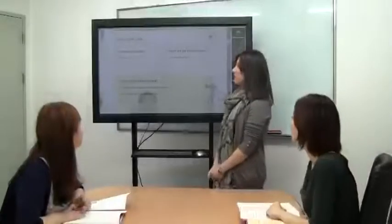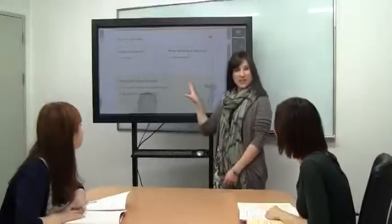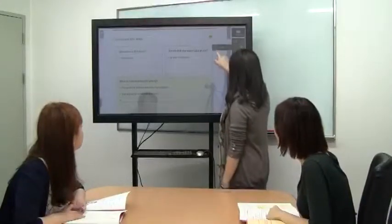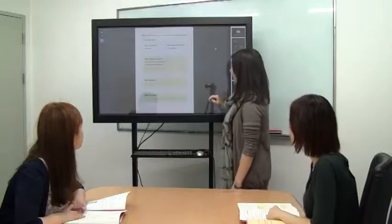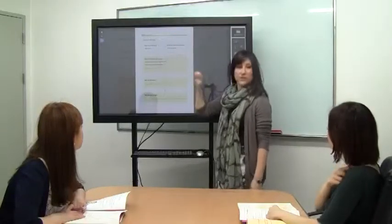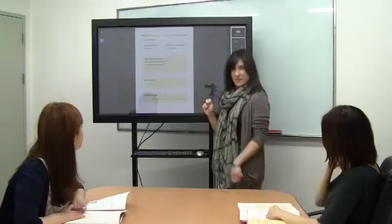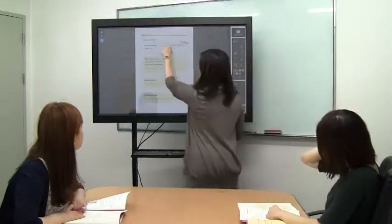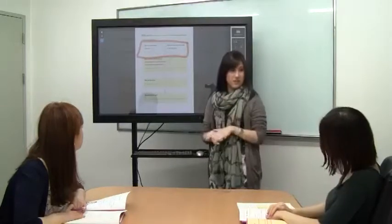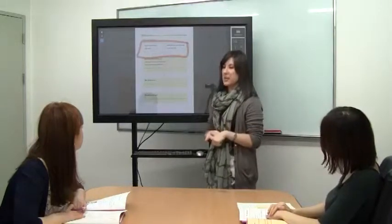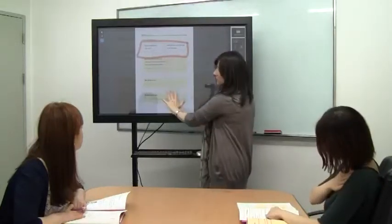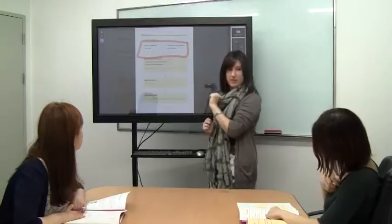Let's do our visual mapping. First, we're going to take a look at the map. So we see two different color boxes. Now, these boxes here — we will talk about the characters and also the place — but we have a different color box here.